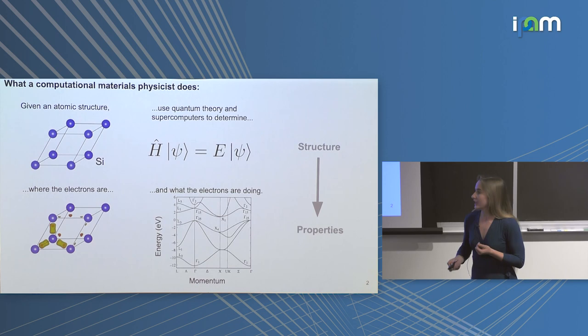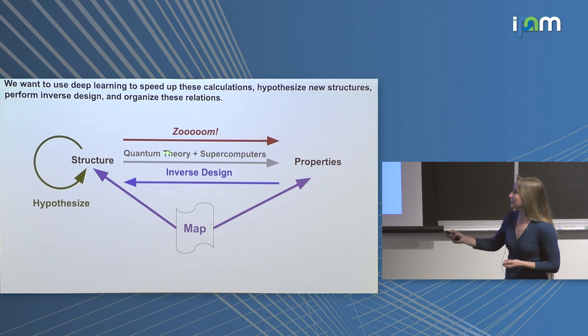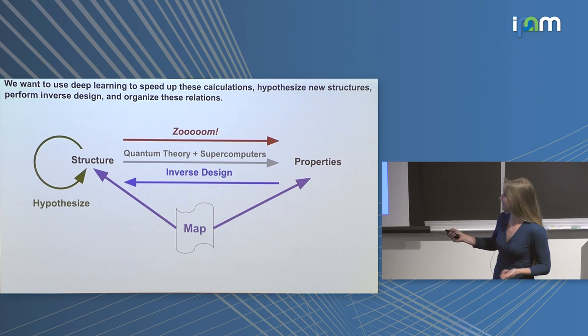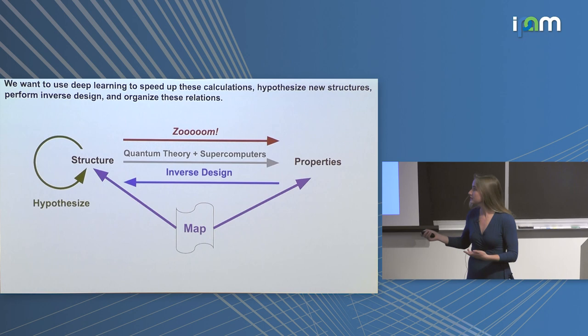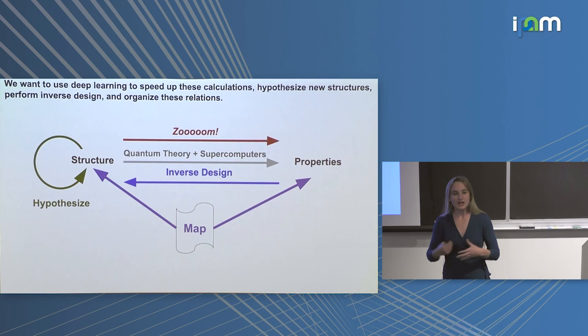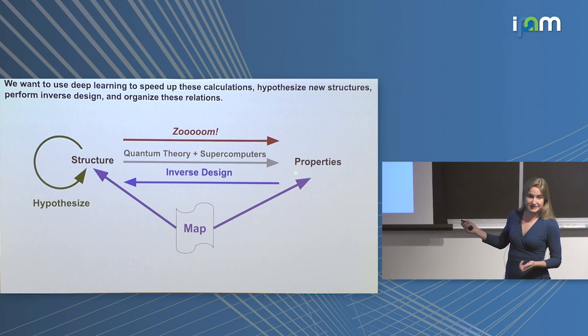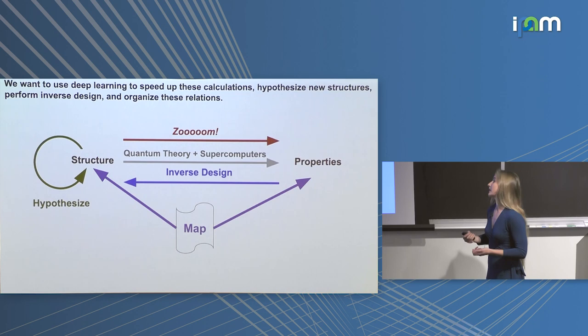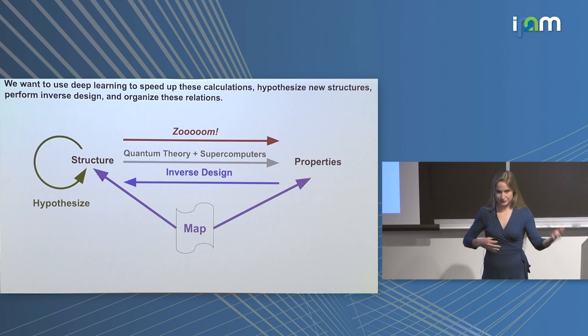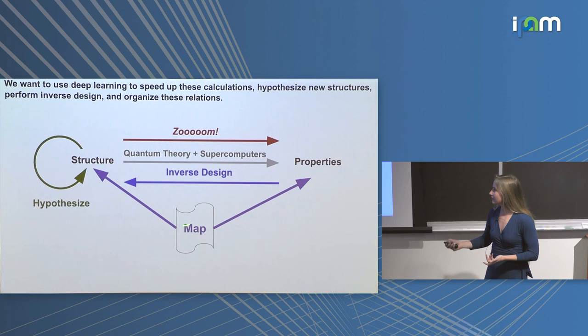We want to use deep learning to aid in these searches. We do quantum theory and supercomputers and we'd like to go faster. We'd also like to generate new atomic structures to feed through these workflows — hypothesize new structures. The holy grail of computational material science is inverse design: give me a list of properties and give me structures that are hopefully synthesizable and manufacturable. We also want to map structures to properties and understand that space.